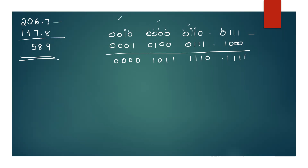So there is a borrow. If you see a borrow, then check the borrow. You can call it an invalid state. If there is a borrow, we call the invalid state correction. Our invalid state correction is minus 6 (subtract 0110). So the correction is 0110 minus this.